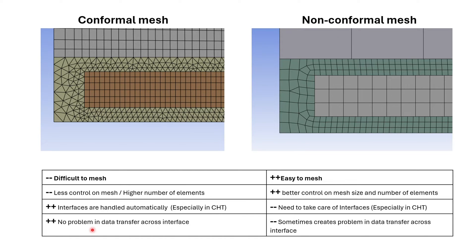This is only my observation from experience so far. Normally people say you get the same solution in conformal and non-conformal mesh, which is true, but sometimes you get problems in data transfer because of the different number of elements. For example, if you have 10 elements on one side and only one on the other, the data transfer involves interpolation at each node, so you might get inaccurate solutions or even divergence.